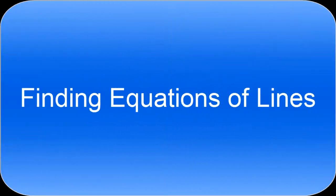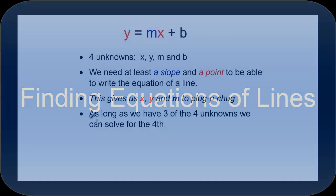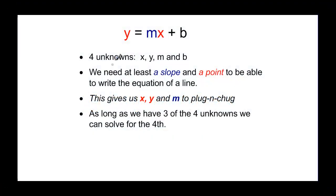This video will talk about different ways to find equations of a line given information about that line. We're going to be doing these in the form of y = mx + b, which is the slope-intercept form. You'll notice that there are four unknowns: x, y, m, and b. We need, in order to be able to find these equations, at least a slope and a point. If we have at least that, then we should be able to write the equation.